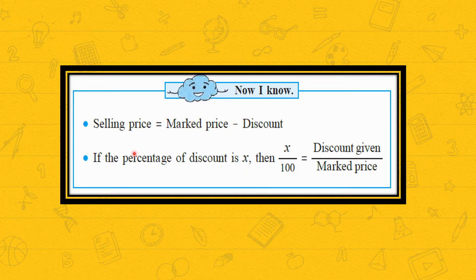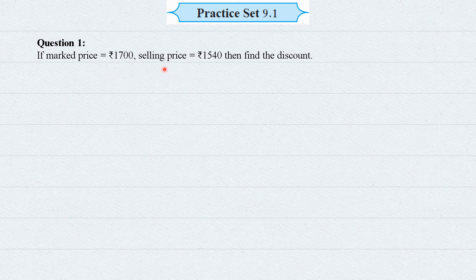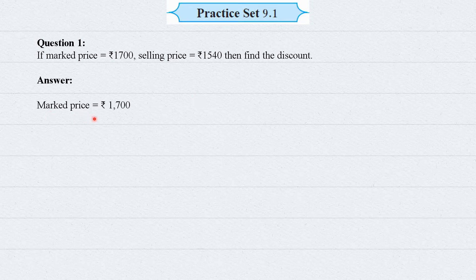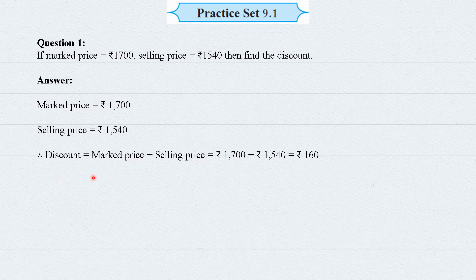From the example, we have two key formulas: selling price = marked price − discount, and if the percentage discount is x, then x/100 = discount/marked price. Practice Set 9.1, Question 1: Marked price = Rs. 1700, selling price = Rs. 1540. Discount = 1700 − 1540 = Rs. 160.